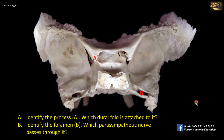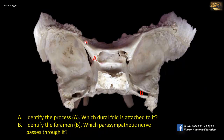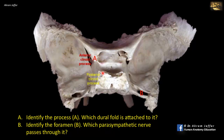Identify process A and which dural fold is attached to it. This is a view of the sphenoid bone. The sphenoid means wedge-shaped — it is wedged between other bones and has a complicated shape with multiple processes. It looks like a butterfly, with a body and two pairs of wings: the lesser wing and the greater wing. Process A is located at the posterior end of the lesser wing and is called the anterior clinoid process. There are also two posterior clinoid processes located at the superior lateral part of the dorsum sellae.